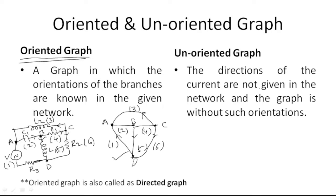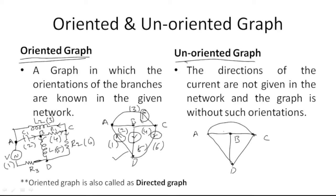In the case of an unoriented graph, these orientations are not present in the graph. That means there is no representation of the current flowing directions in the elements of the graph — that graph is called an unoriented graph. An important point: an oriented graph is also called a directed graph.